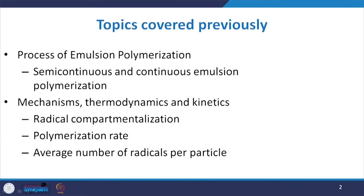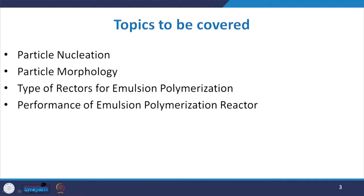Previously we discussed emulsion polymerization under the headings of semi-continuous and continuous processes, the mechanism, thermodynamic approaches, and kinetic aspects including radical compartmentalization, polymerization rate, and average number of radicals per particle. Now in this lecture, we will start with particle nucleation, then particle morphology, different types of reactors, and the performance approach of emulsion polymerization reactors, which is extremely important for the economics of any polymerization process.